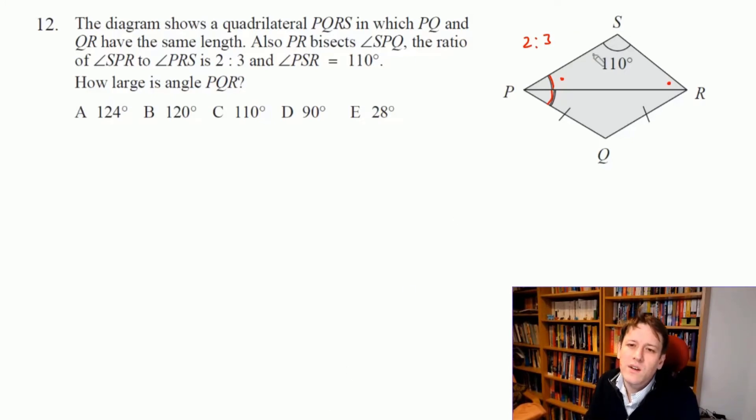The angles in a triangle add up to 180 degrees, so these two, let me just call them x and y for now, x plus y must add up to 180 minus 110, which is 70 degrees. So we've got to split that 70 degrees in the ratio of 2 to 3.